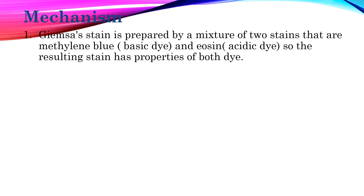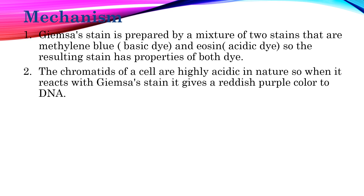Now let's see the mechanism. Giemsa stain is prepared from a mixture of two stains: methylene blue, which is a basic dye, and eosin, which is an acidic dye. The resulting stain has the properties of both dyes. The chromatids of a cell are highly acidic in nature, so when they react with Giemsa stain they give a reddish-purple color to the DNA.